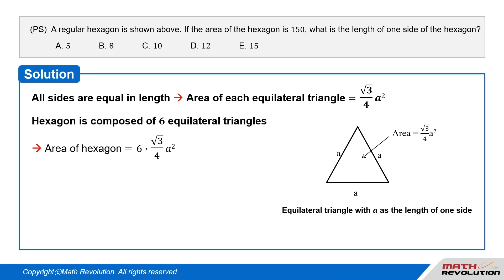The hexagon is composed of six equilateral triangles, so we multiply this expression by six to obtain 6(√3/4)A².